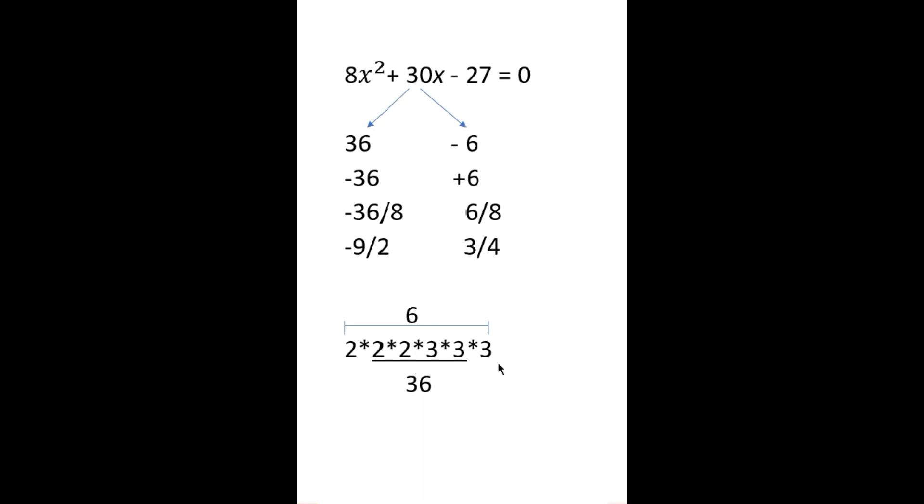27 means 3 into 3 into 3. So in the middle part, 2 into 2 into 3 into 3, that comes to 36. And the extreme left figure, 2 into 3, is equal to 6.